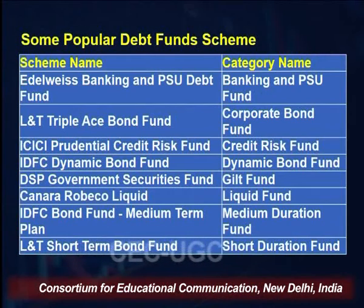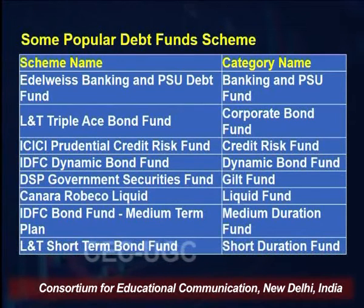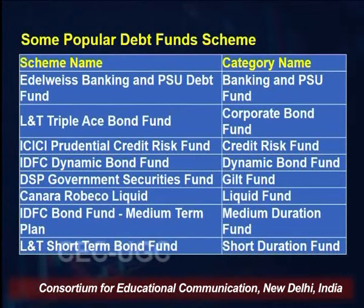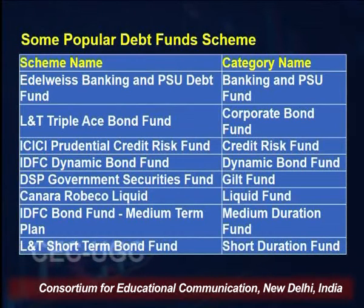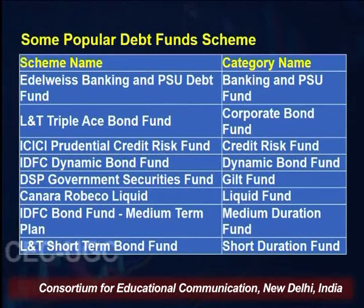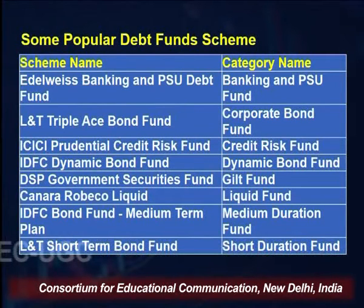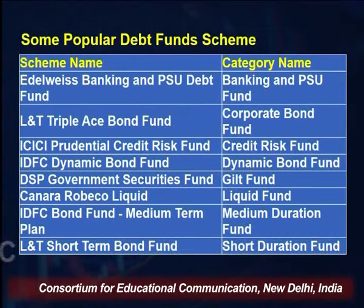Some popular debt schemes that have given good returns over time include Edelweiss Banking and PSU Debt Fund, L&T Triple Ace Bond Fund, ICICI Prudential Credit Risk Fund, IDFC Dynamic Bond Fund, DSP Government Securities Fund, Canara Robeco Fund, IDFC Bond Fund (medium term), and L&T Short Term Fund. These fall under categories such as banking and PSU funds, corporate bond funds investing only in highly-rated (AAA) instruments, and government securities funds.